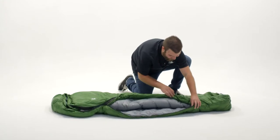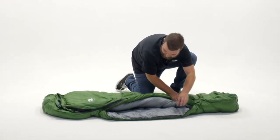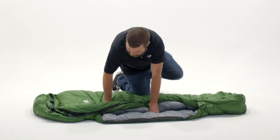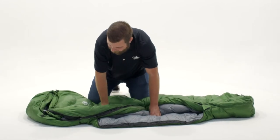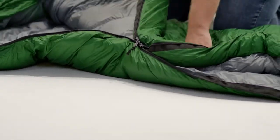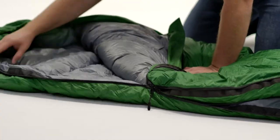For additional temperature regulation, the hood area has multiple drawcords that can be adjusted to provide optimal thermal management. To retain the most body heat, there's a shoulder baffle that can be cinched around your neck to keep out cold drafts.